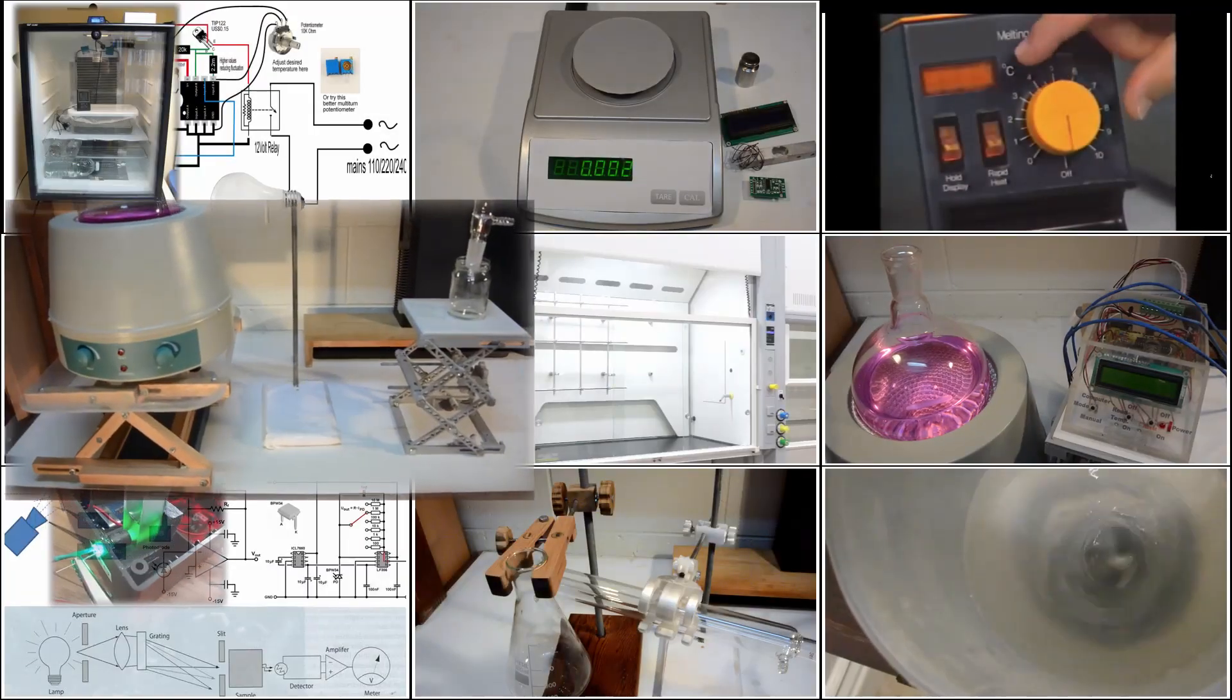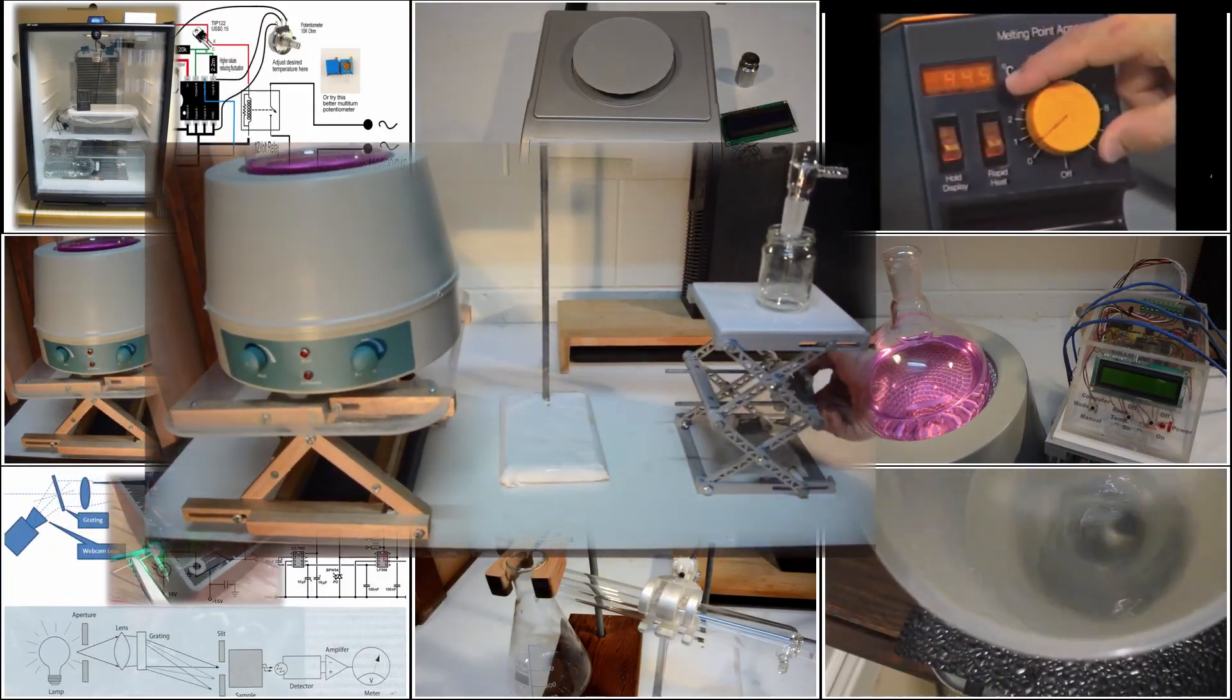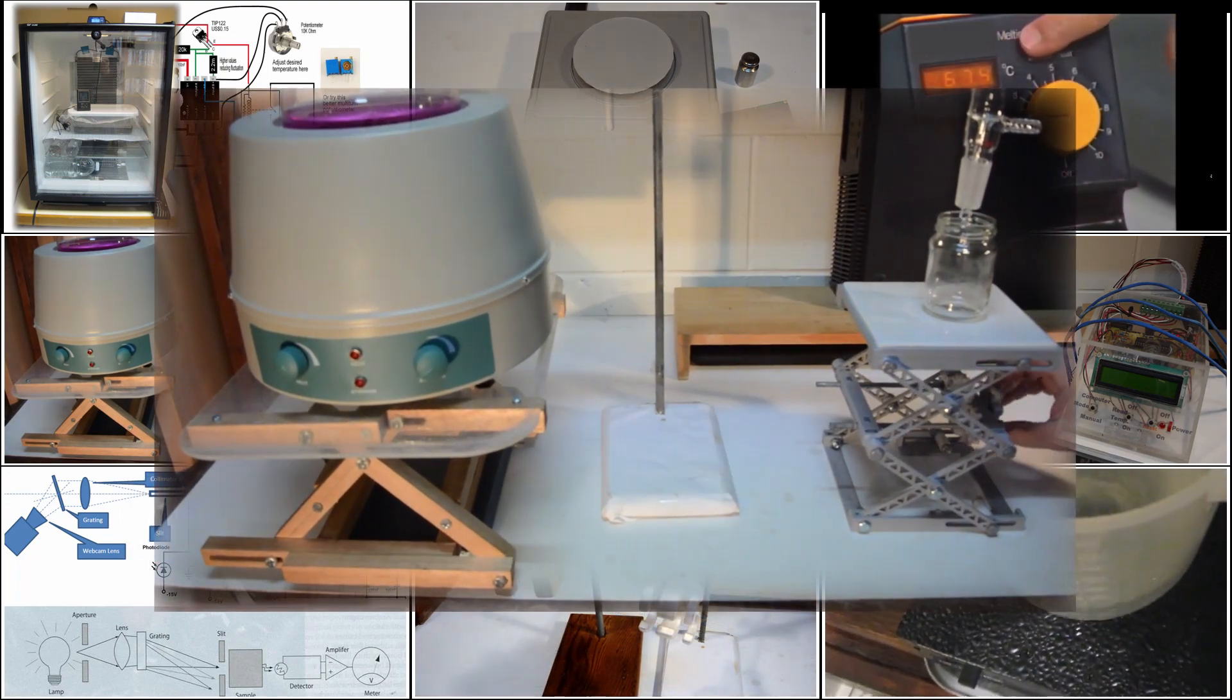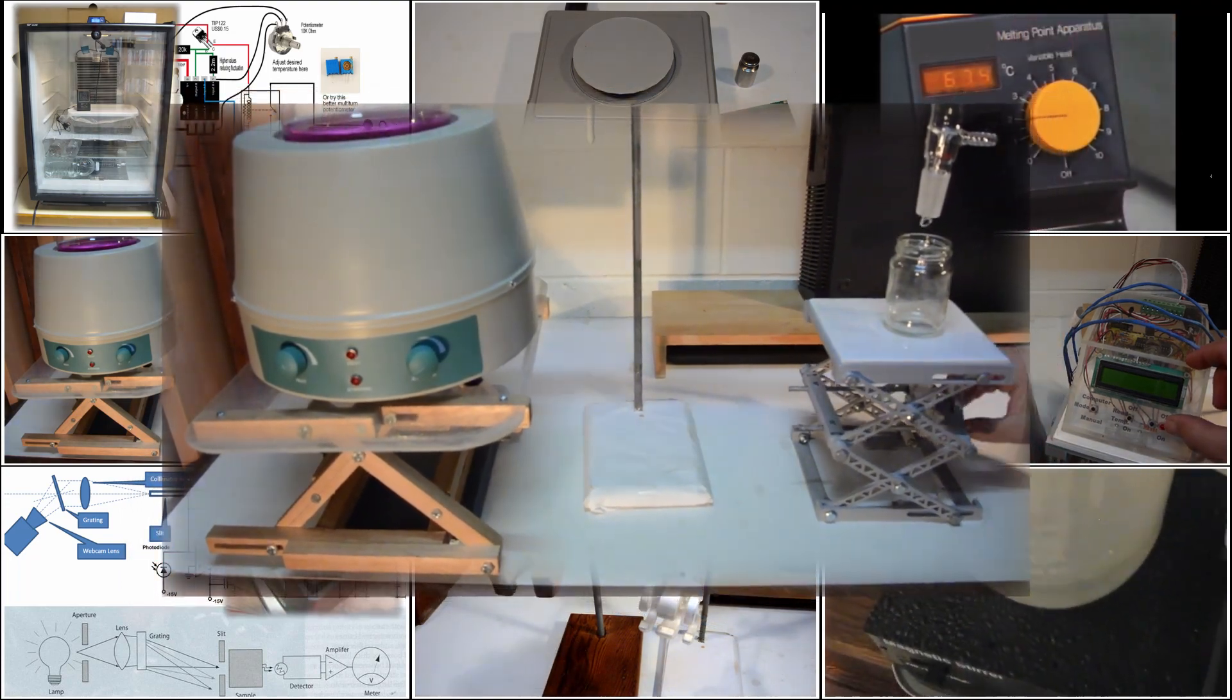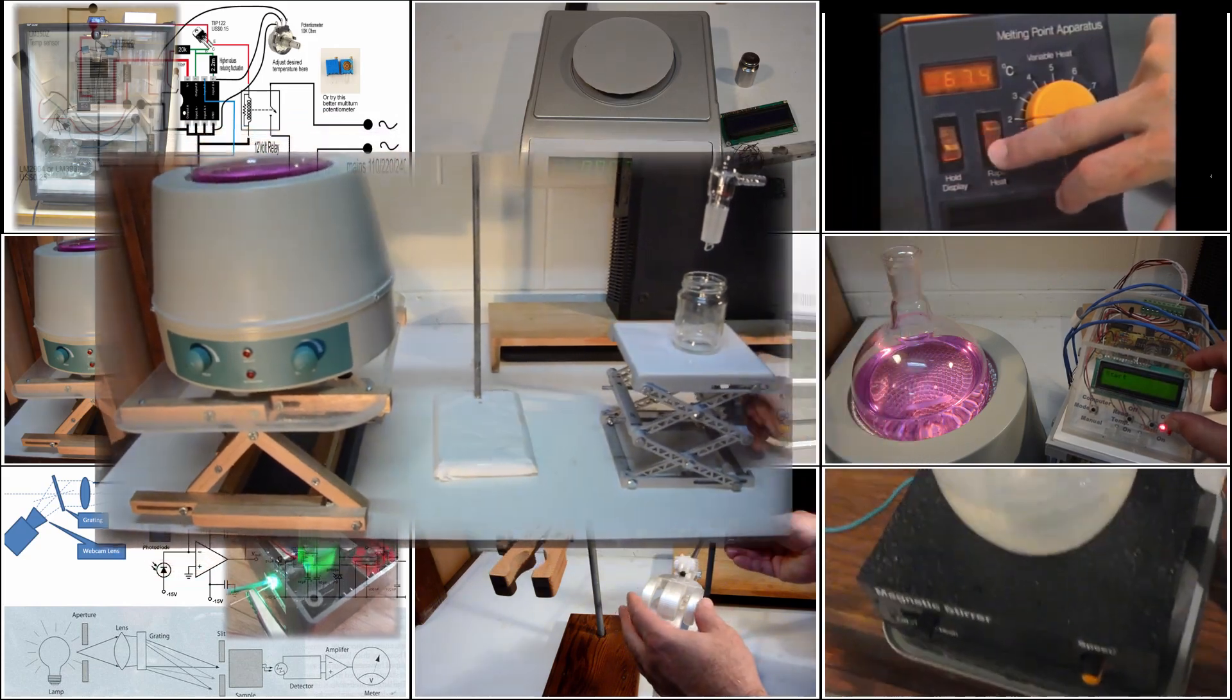This is the second in a series documenting the design and making of various homemade lab equipment. The first episode shows the design and making of a lab scissor jack. The link is in the description below.